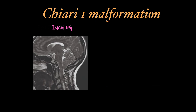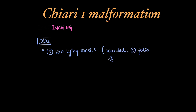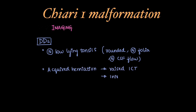Tonsillar descent can be seen in other cases as well. Normal low-lying tonsils will be rounded with normal folia and normal CSF flow. Acquired tonsillar herniation can be seen in cases of raised intracranial tension or intracranial hypotension.